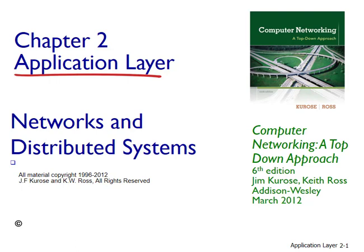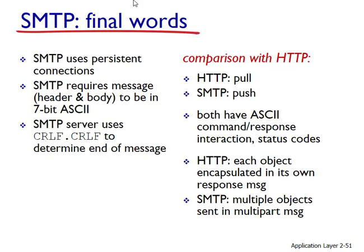Let's pick up where we left off. Once SMTP delivers the message to the destination mail server, the message is placed in the user's mailbox. We have assumed that a person reads his or her mail by logging into the server host and executing a mail reader that runs on that host. Up until the early 1990s, this was the standard way of doing things, but today mail access uses a client-server architecture.